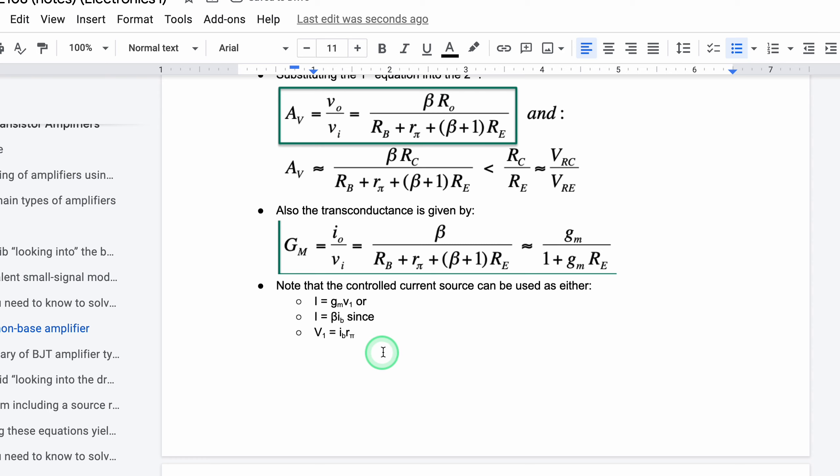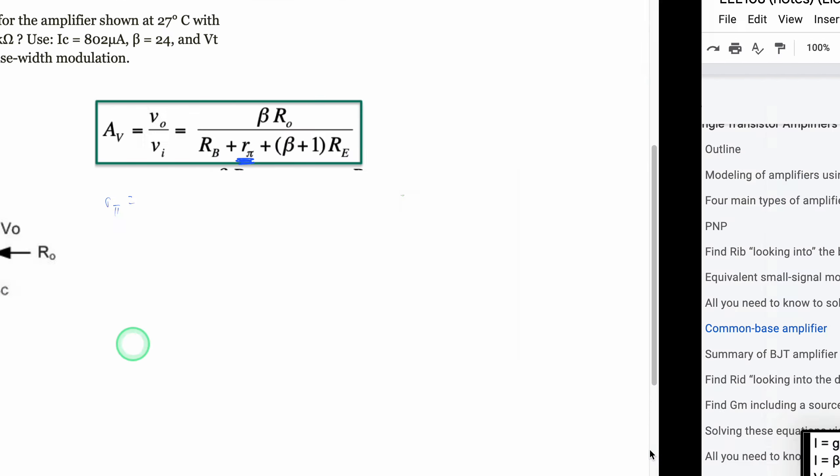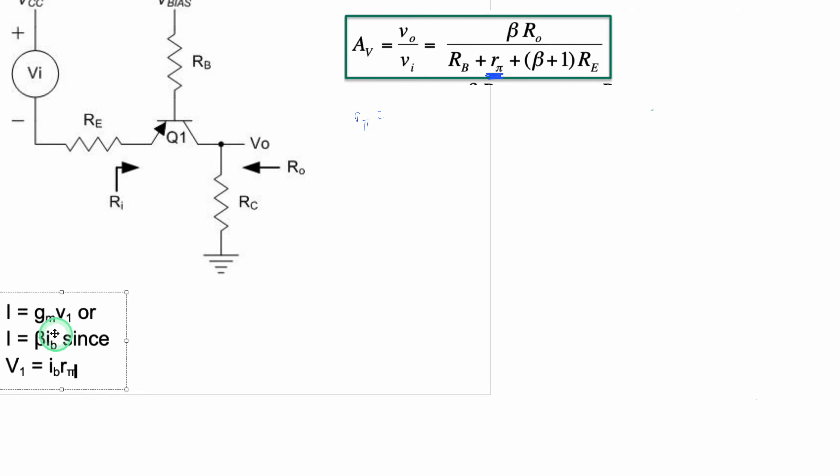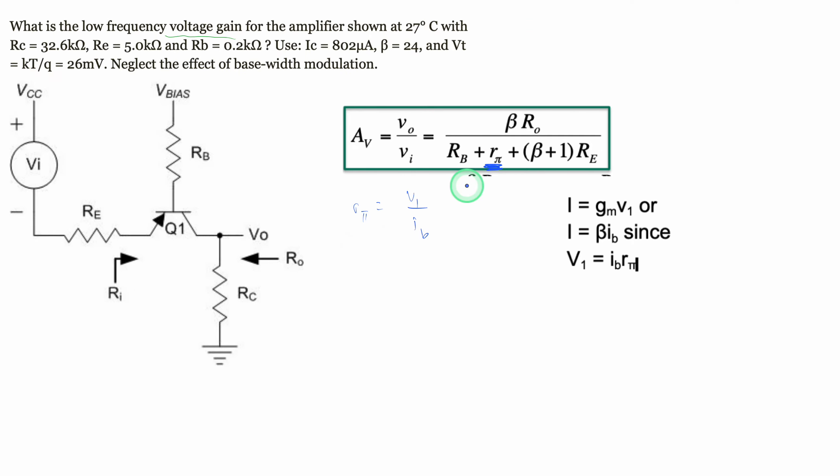So r_pi is going to be equal to—if we modify this a little bit—V_T over our I_B. Now from here we don't know our V_T or I_B. We do know our beta though, so what we can do is plug this in and solve for our g_m.